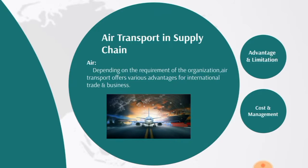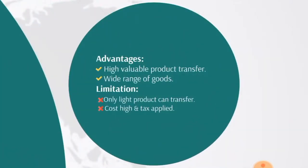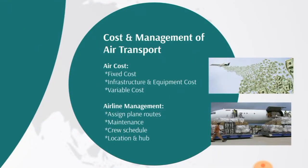Air transport in the supply chain. Air transport offers numerous advantages for international trade and business depending on the requirements of an organization. Advantages include that a wide range of goods can be transferred. Limitations are that only light products can be transferred, the cost is high, and tax is applied. There are three types of cost in air transport: fixed cost, infrastructure and equipment cost, and variable cost. For airline management routing, proper scheduling is necessary for maintaining regular flights, the hub should be placed near the airport, and proper delivery times must be maintained.